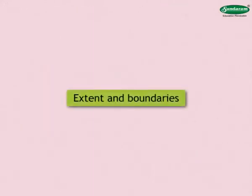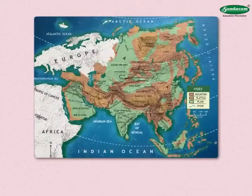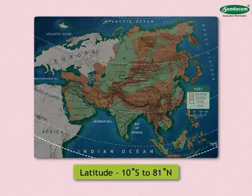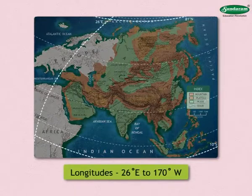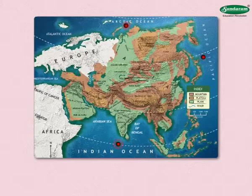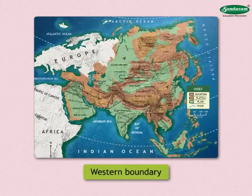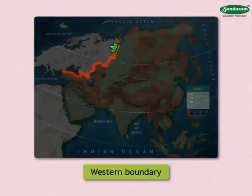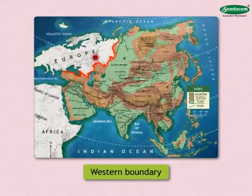Let us begin with the study of extent and boundaries of Asia. This continent extends from 10 degrees south to 81 degrees north latitudes and from 26 degrees east to 170 degrees west longitudes. The Arctic Ocean in the north, the Pacific Ocean in the east, and the Indian Ocean to the south define the boundaries. The western boundary mainly passes through the Ural Mountains and adjoins the continent of Europe.